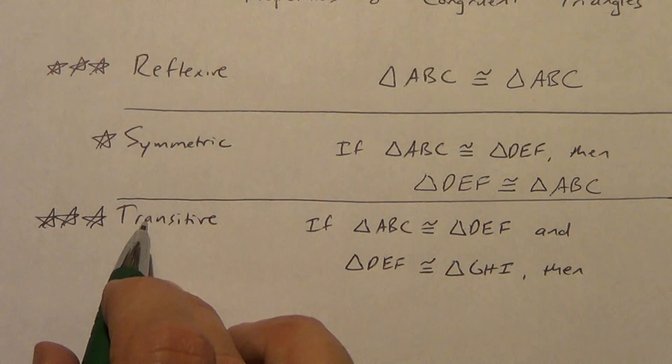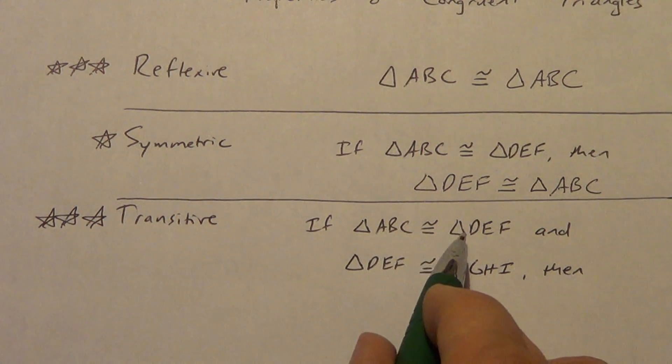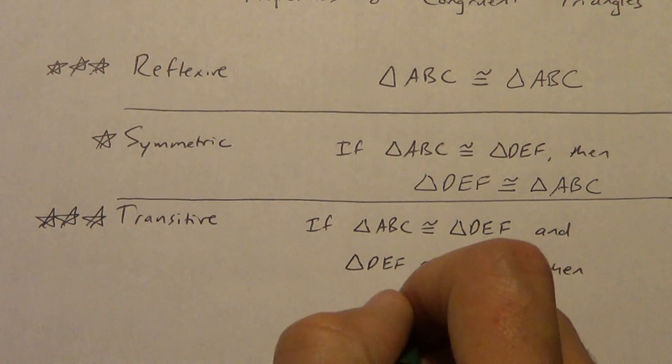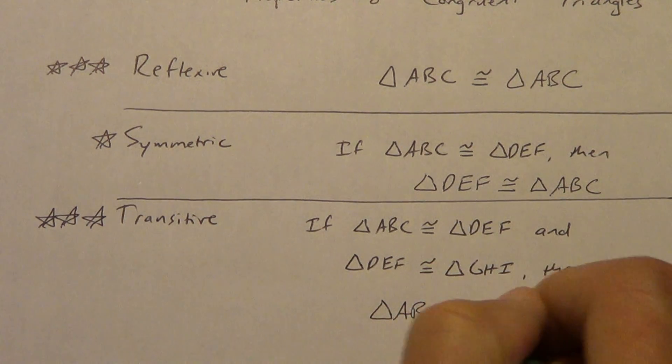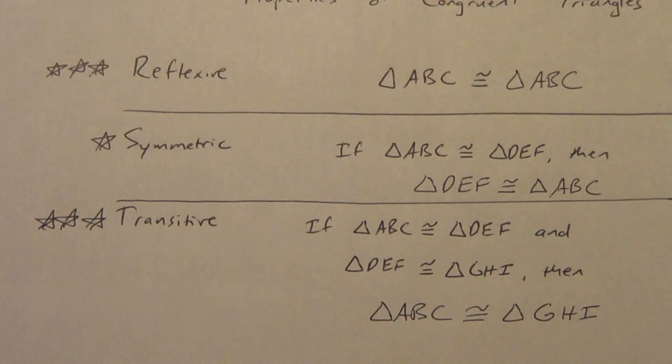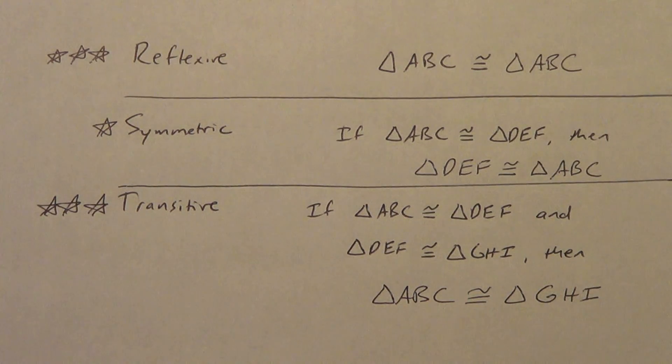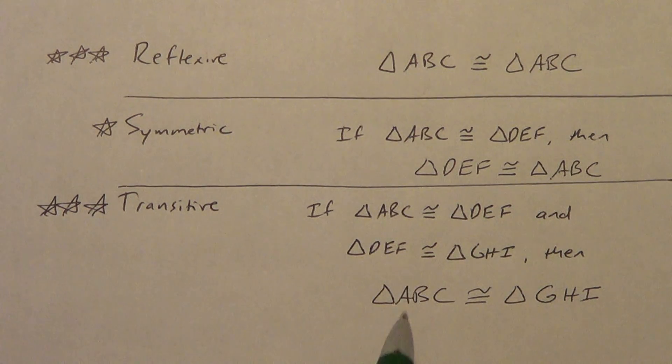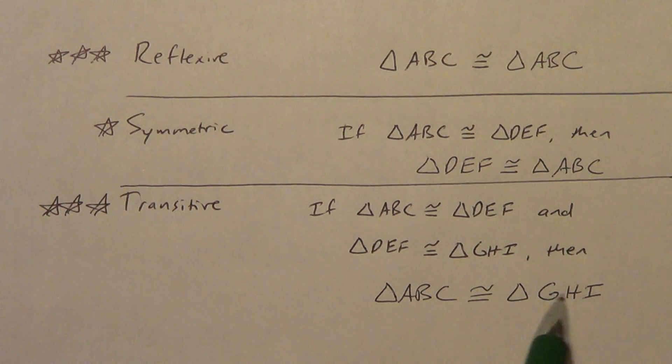Transitive has the idea of skipping something. So if triangle ABC is congruent to triangle DEF and triangle DEF, notice it's the same, is congruent to triangle GHI, then what? Well, we skipped the thing in the middle. So triangle ABC is congruent to triangle GHI. Now we could go back and ask you questions like we did in that first video, like segment AC is congruent to what? Well, I could move up here and say segment AC is congruent to segment DF. Or down here, I could say segment AC is congruent to segment GI. Both of those would be correct answers.